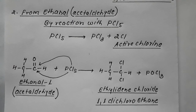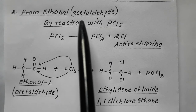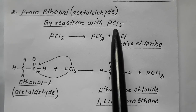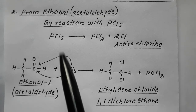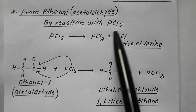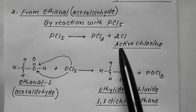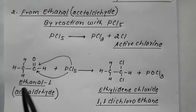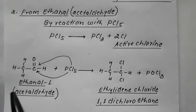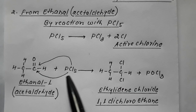The second method to prepare ethylidene chloride is by reaction of acetaldehyde (ethanal) with PCl₅. Ethanal — commonly termed acetaldehyde — is a two-carbon compound with an aldehyde group at position one. When acetaldehyde is made to react with PCl₅, it decomposes to give PCl₃ and two active chlorine atoms.